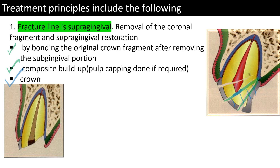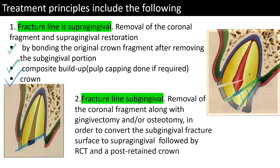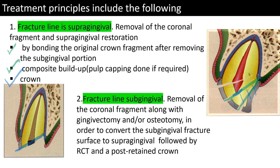In another situation where the fracture line extends subgingivally, the coronal fragment is removed along with a portion of gingiva — this is called gingivectomy. If that is not sufficient, a portion of bone must also be removed, which is osteotomy along with gingivectomy. This converts the subgingival fracture line to a supragingival position, making it easily visible. Once achieved, we give RCT of the canal, place a post and prepare a core, followed by a crown restoration.